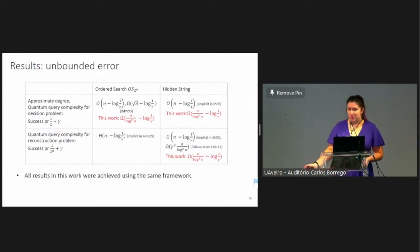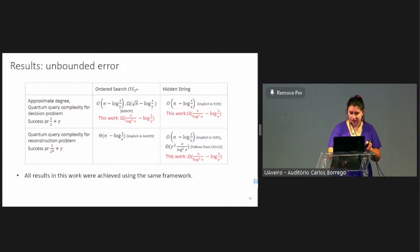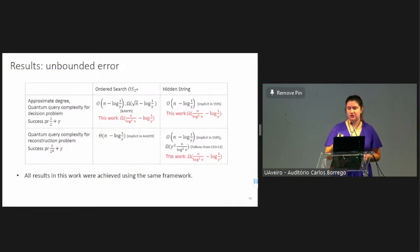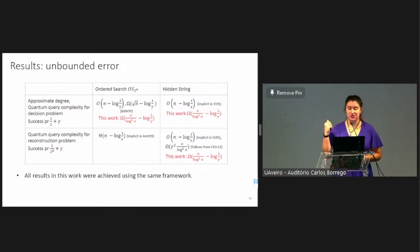In this work, we show a lower bound on approximate degree and quantum query complexity for the decision versions of ordered search and hidden string that is almost tight. We also recover the previous state of the art for the reconstruction version of quantum query complexity of hidden string. We also consider all of these problems in the unbounded error setting, where we want the algorithm to output the correct value with probability one-half plus some small gamma, or better than random guessing for reconstruction. We show the same lower bounds with the same dependency on the parameter n and tight dependency on the error parameter.